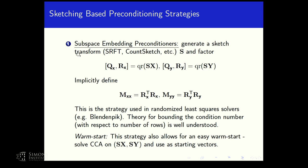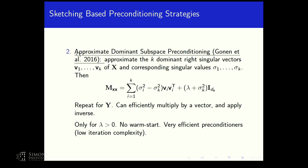The subspace embedding approach has the same structure used in blended randomized least-squares solvers. The dominant subspace approach, from a recent paper, approximates the top eigenvalue singular vectors and uses them to form an approximation of the Gram matrix, but works only for lambda greater than zero, compensating for the singular vectors that are ignored.